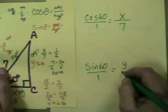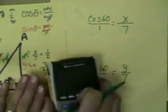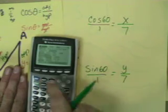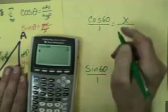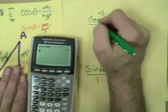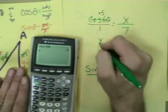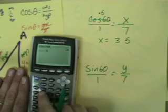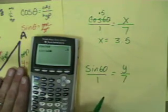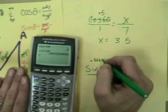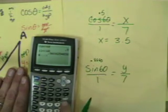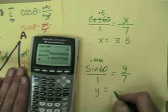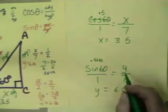Okay, putting this on the calculator I'm going to check my mode, good got degree, and I'm going to say what is the cosine of 60, it's 0.5, cross multiply, x equals 3.5. Okay, sine of 60 is 0.8660, take that and multiply it times 7 and I get y equals 6.06.